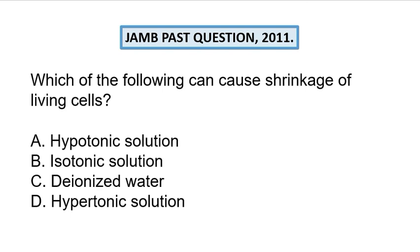Hello there, welcome to today's dose of germ biology past question, year 2011. The question says: which of the following can cause shrinkage of living cells? Option A is hypotonic solution, B is isotonic solution, C is deionized water, and D is hypotonic solution.